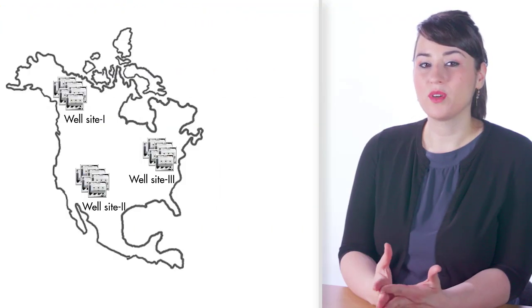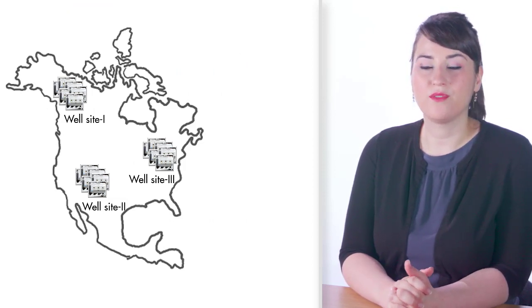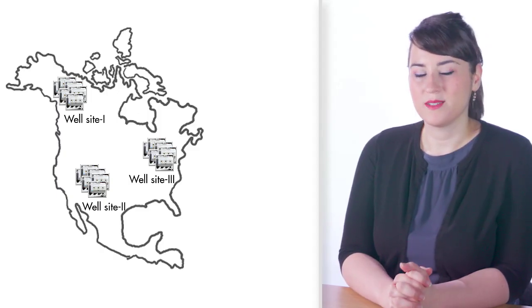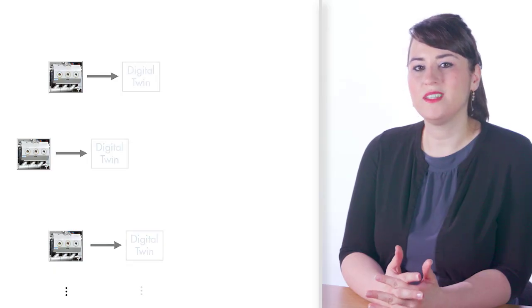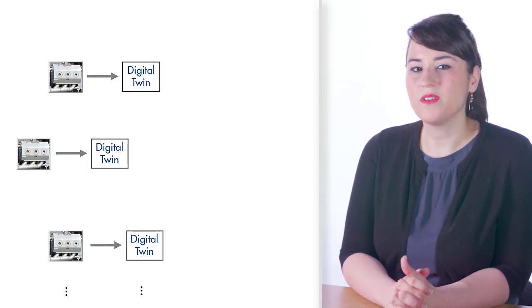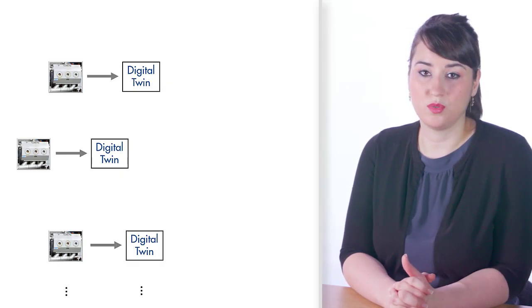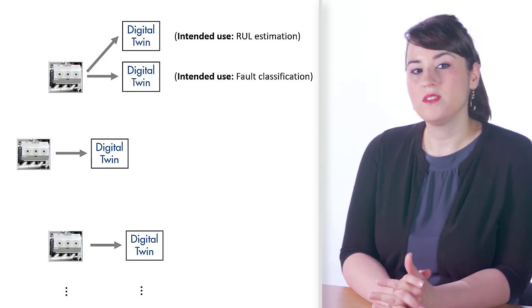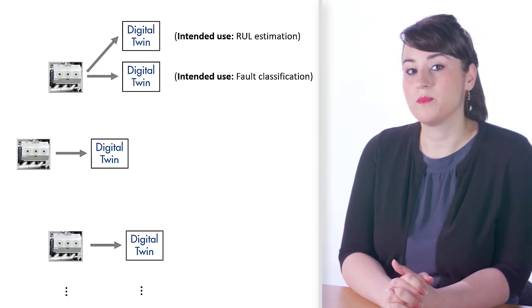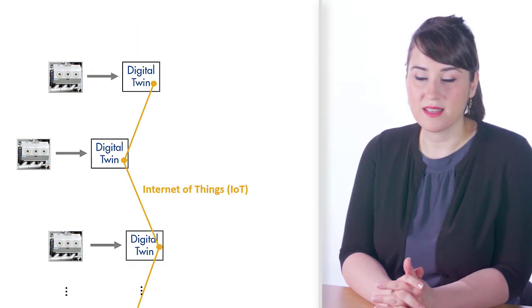Now you may be wondering how many digital twins we need to create for the fleet. For every individual asset, we need to create a unique digital twin. This means that for each of the pumps at different well sites, we need to create a unique digital twin that has been initialized with that specific pump's parameters. Based on the intended use, a pump may have multiple digital twins — for example, if you want to do failure prediction and fault classification, you need different models that serve these different purposes. All these digital twins are connected through the Internet of Things, and they share information.